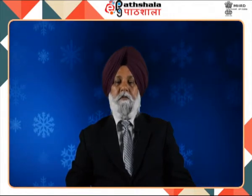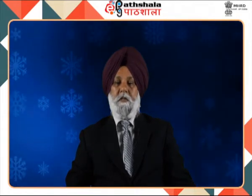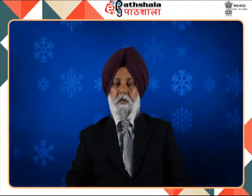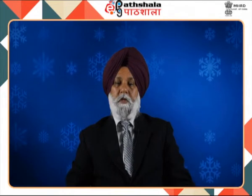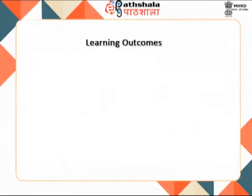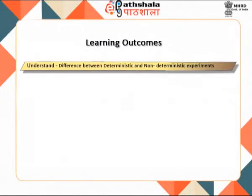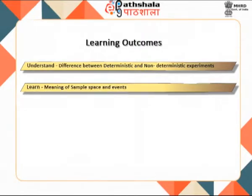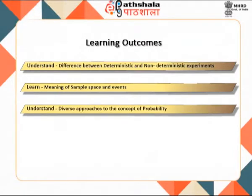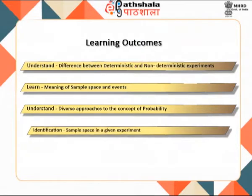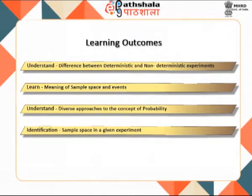With the help of examples, we will discuss how uncertainty and variation in the outcomes of an experiment prompts the need of probability to describe them. After completing this module, you shall be able to understand the difference between a deterministic and non-deterministic experiment, learn the meaning of sample space and event, identify the sample space in a given experiment, and understand the diverse approaches to the concept of probability.